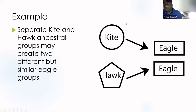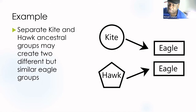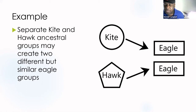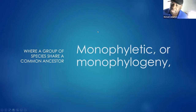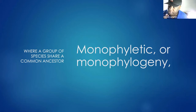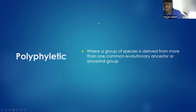The bald eagle may have come out of a fish-eating kite, and the golden eagle may have come out of a hawk. So the bald eagle and golden eagle look almost similar but may have had independent origins — that's convergent evolution. Kite and hawk groups may both create two very similar eagles. Buzzards can turn into eagles; there are birds called buzzard-eagles that look like both. When a group of species shares one common ancestor, they are called monophyletic. In general, scientists think eagles are polyphyletic — derived from more than one common evolutionary ancestor.